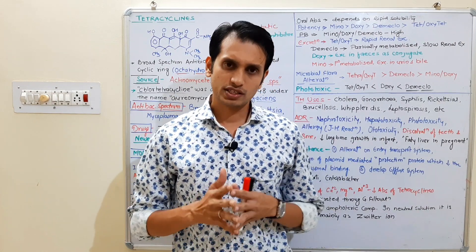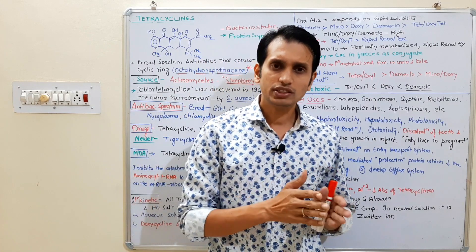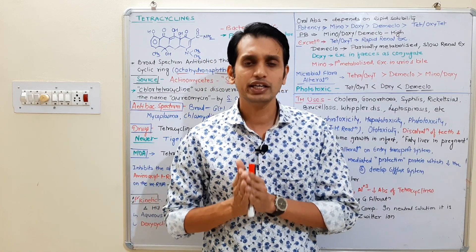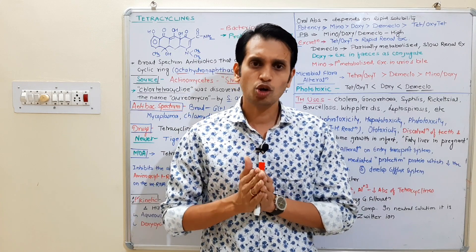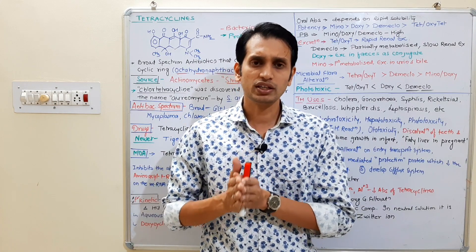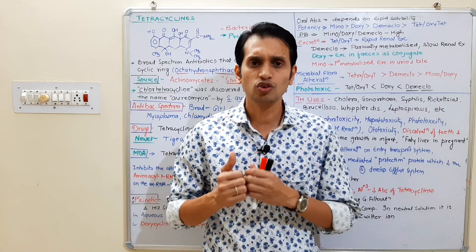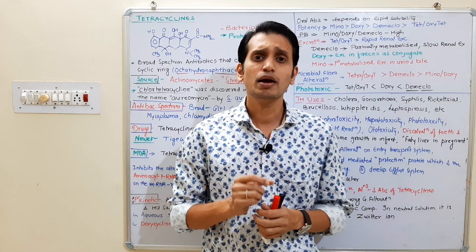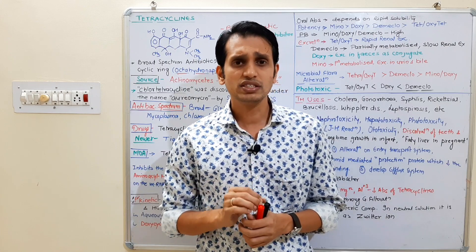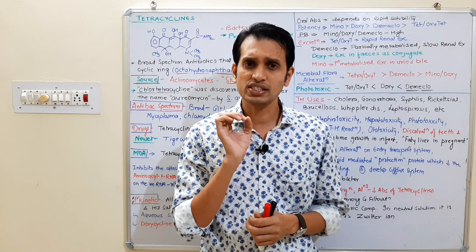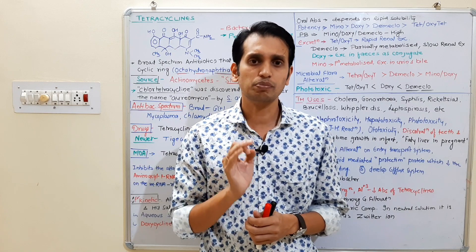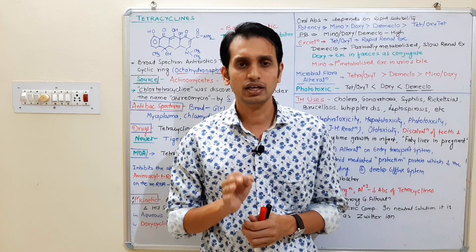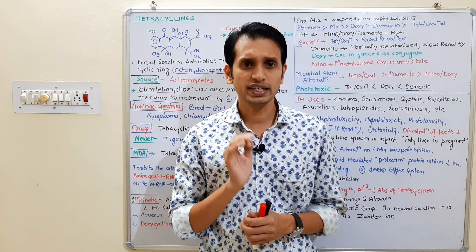Tetracyclines are another class of protein synthesis inhibitors — they inhibit protein synthesis within pathogens. They act as bacteriostatic drugs, meaning they only inhibit the growth of bacterial cells and do not kill the bacteria completely. They are known as bacteriostatic drugs.